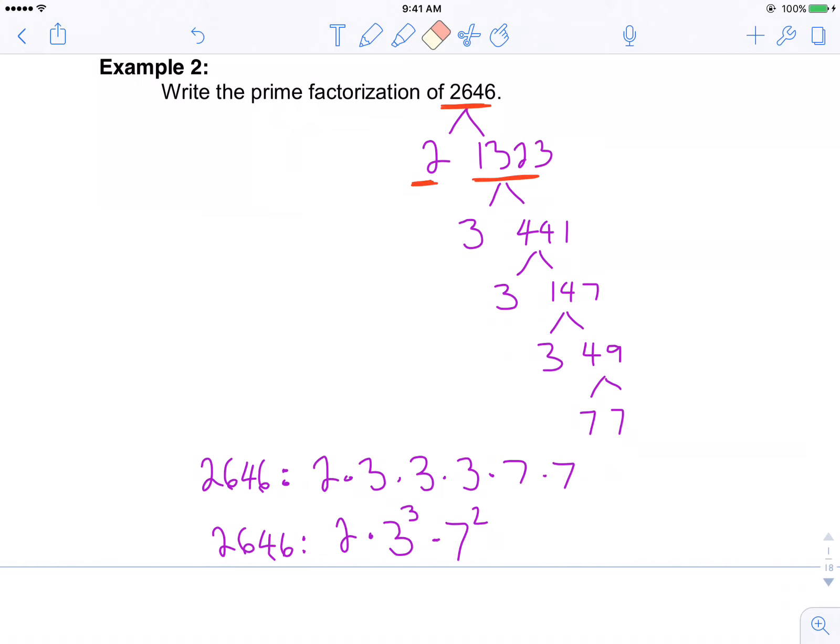So if we divide 1,323 by 3, we get 441. We divide 441 by 3, we get 147. So we're down here now, 147. If I divide 147 by 3, I get 49. And I should know that 49 divided by 7 is 7.